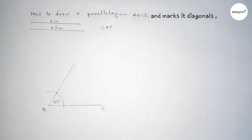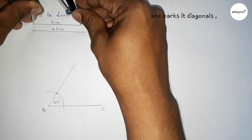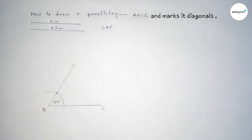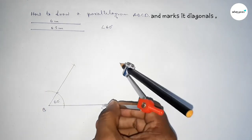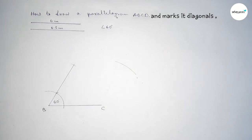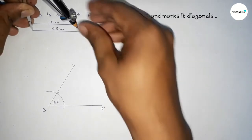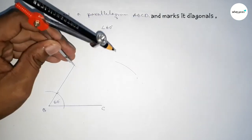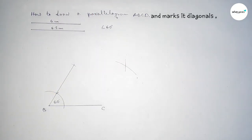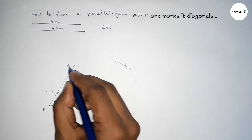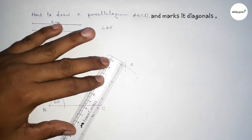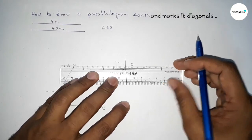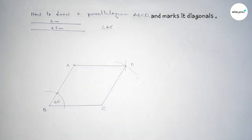Now taking the length of 6 centimeters using the compass and placing it here, cutting with the same length. Then putting the compass on point C and drawing an arc here. We take here point A and here point D. First joining C and D, then joining A and D.